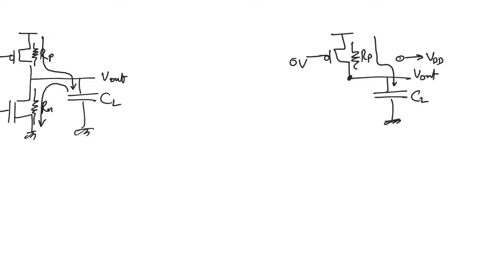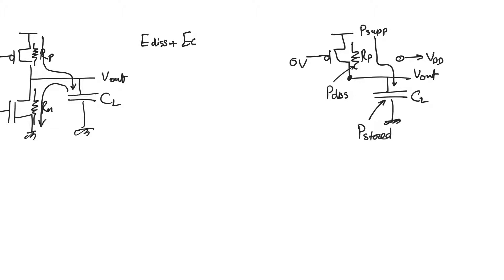We find that two things happen. We draw current from the supply, and this current goes through the PMOS resistance where it is dissipated, and part of it goes to the capacitor where it is stored. So the power drawn from supply goes to two locations: it dissipates in the resistance and it stores in the capacitance. Let's talk about energy instead of power: energy dissipated in the resistor plus energy stored in the capacitor equals energy drawn from supply. So if we find E_C and E_supply, we can find E_dissipated as the difference between the two.